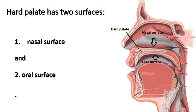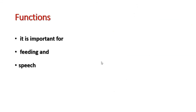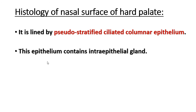This is the incisive fossa, this is the hard palate, this is the nasal cavity, and this is the oral cavity. This is the nasal surface and this is the oral surface. The histological features of the nasal surface and oral surface are a little bit different. The function is mainly for feeding and speech.